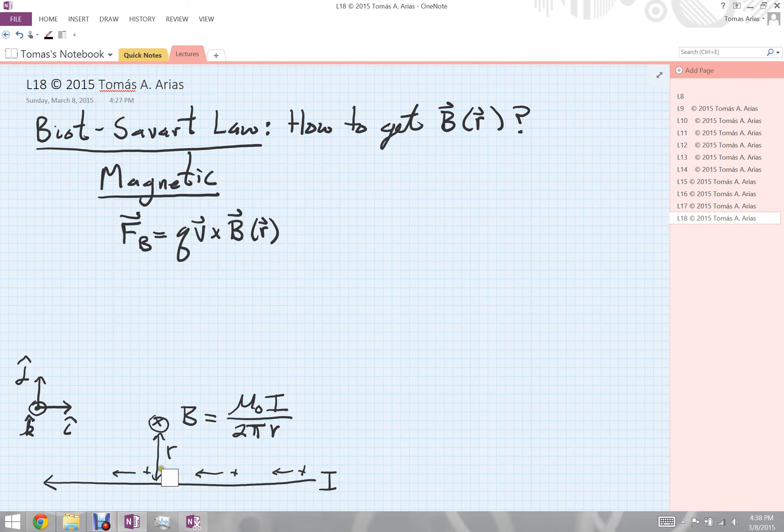then at a location directly above that wire at a distance r, I know that this magnetic field points inward, as indicated by the little cross there, the back end of our arrow going into the page, with a magnitude that goes like the permeability constant μ₀ times the current divided by 2π times the distance.